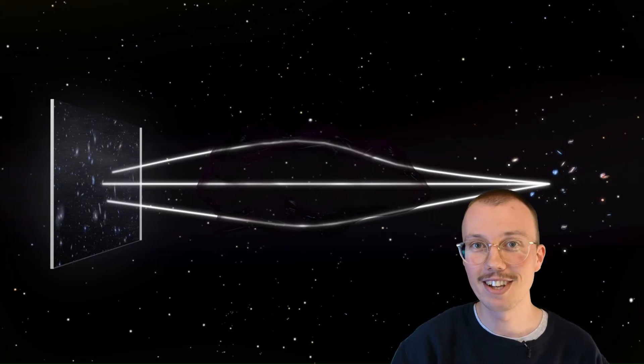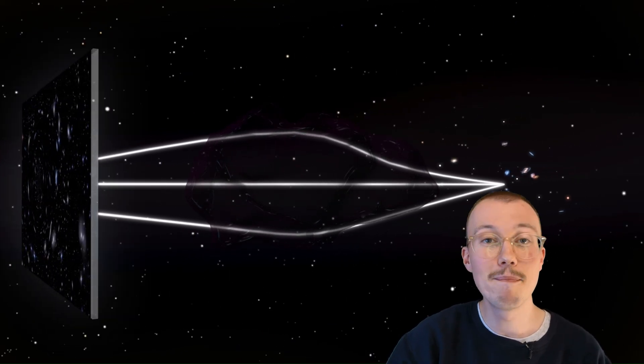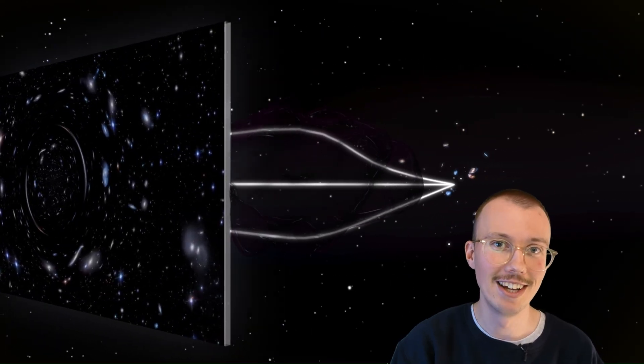Fast forward 100 years, and gravitational lensing is still at the forefront of scientific discovery. For instance, by spotting the subtle signs of weak lensing, scientists are able to work out where there must be clumps of dark matter, that mysterious, invisible substance that makes up 85% of the universe's mass.